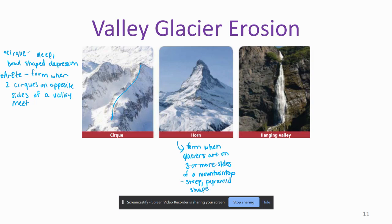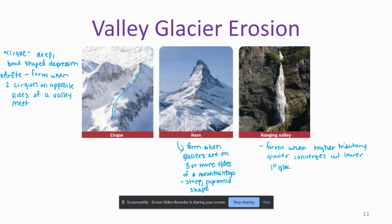Next we have a hanging valley. This forms when a higher tributary glacier converges with a lower primary glacier and then retreats.